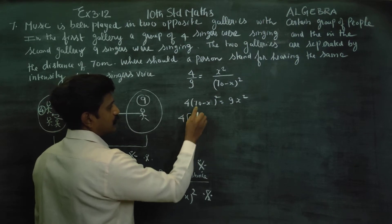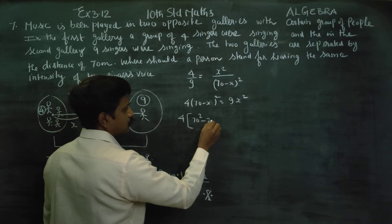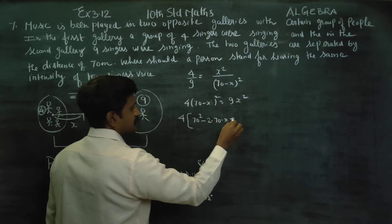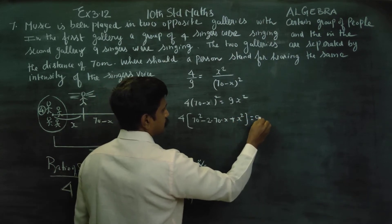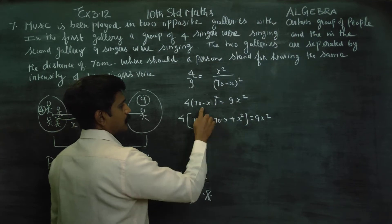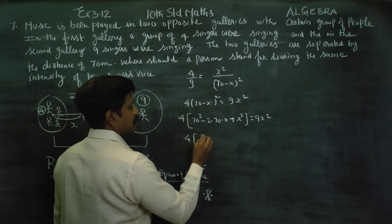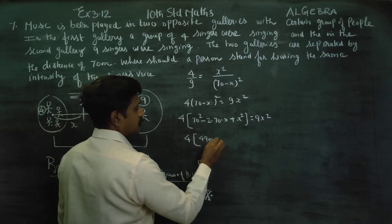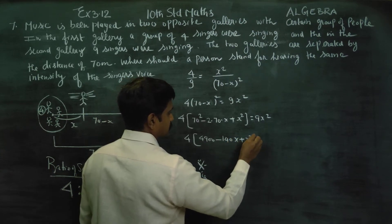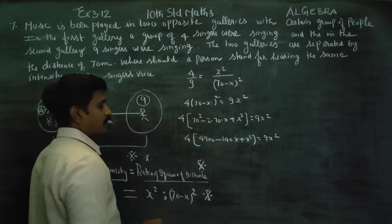Expand using the (a minus b) whole square formula: a squared minus 2ab plus b squared. So 4 into (4900 minus 140x plus x squared) is equal to 9x squared.